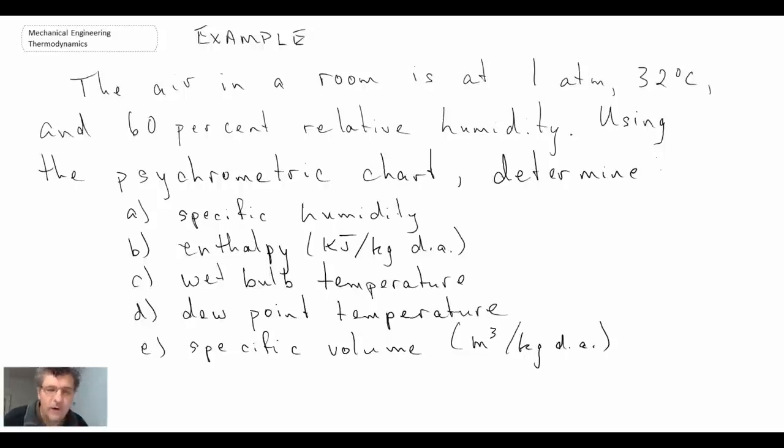So there's our problem statement. What we have been told: first of all, we're dealing with room air at one atmosphere, so that gives you a bit of a hint that it means we can use the psychrometric chart. And we're told that the temperature of the air, that would be the dry bulb temperature, is 32 degrees C, and we're also told that we have 60% relative humidity.